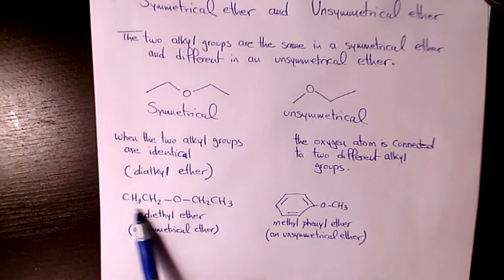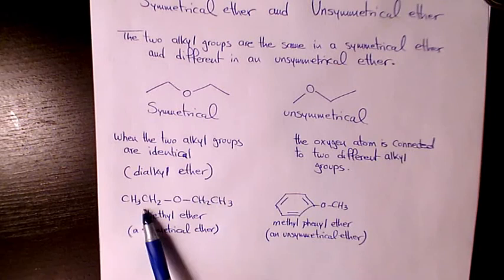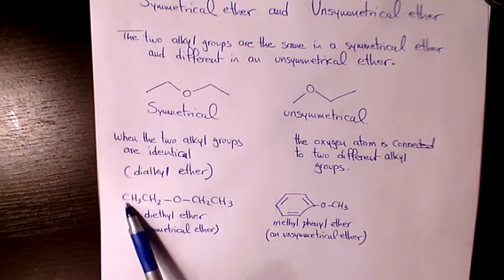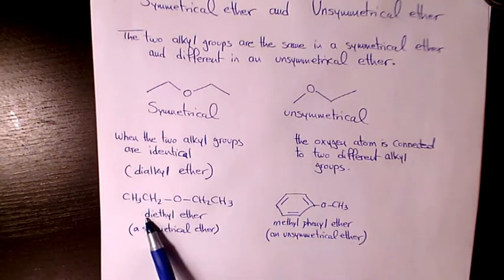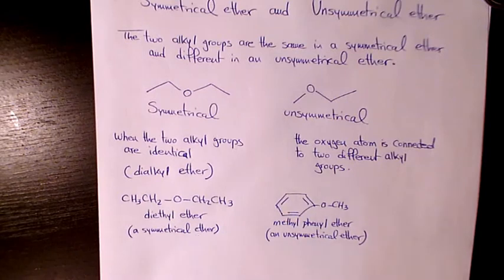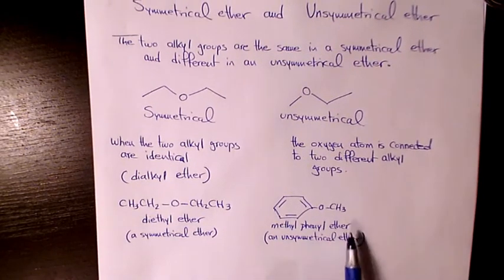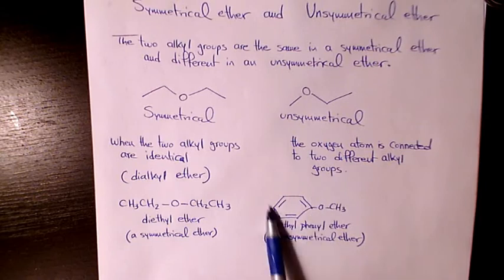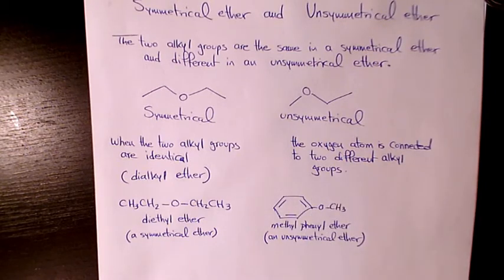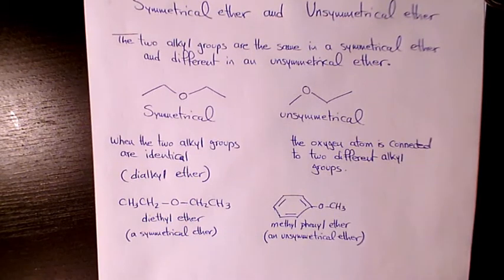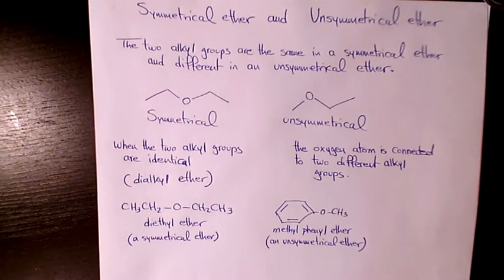One of them, as you see here, has ethyl group and ethyl group that are exactly the same, identical. So we call it diethyl ether, which is a symmetrical ether. On the other hand, we have a phenyl group or benzene connected to a methyl group. So we have methyl phenyl ether, an example of unsymmetrical ether.